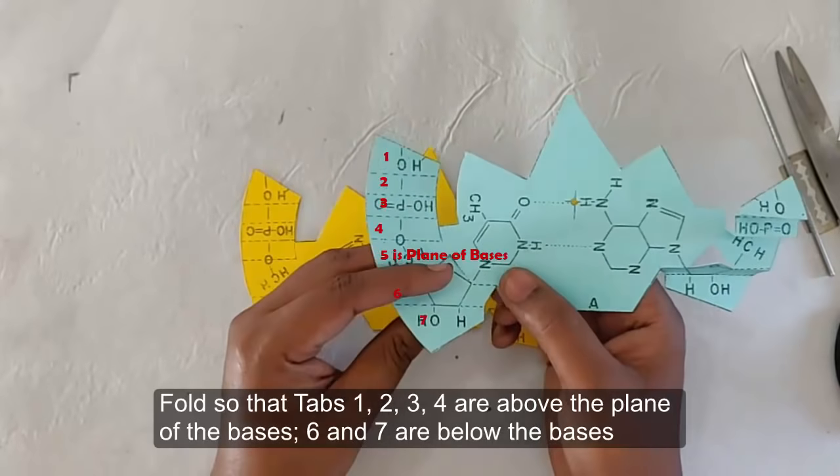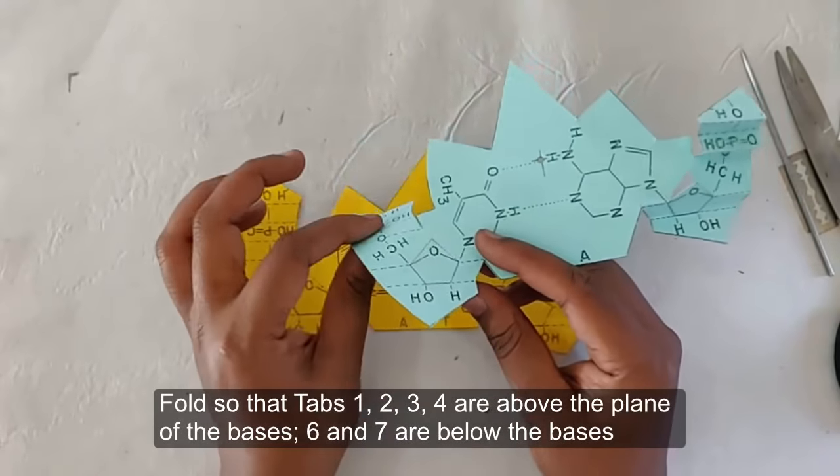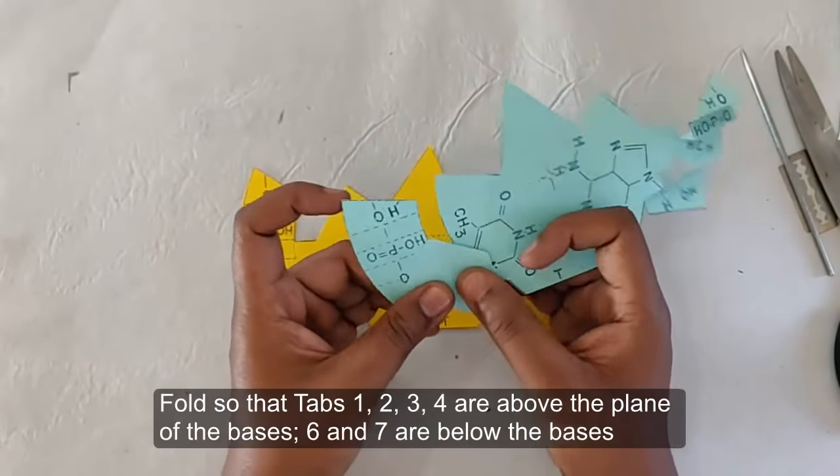Here again fold so that tabs 1, 2, 3, 4 are above the plane of the bases. 6 and 7 are below the bases.